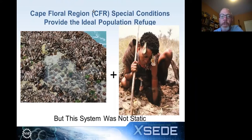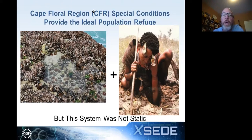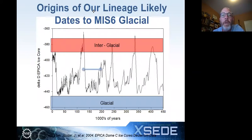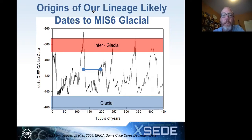This system was obviously not static — one of the first slides showed that the world's climate is constantly in flux. Today we're in an interglacial, but in the past we were in a glacial. The origin point of our lineage, indicated by that blue bar, was during one of the longest, coldest glacial phases on record — marine isotope stage six. The world would have been a very different place at that time.